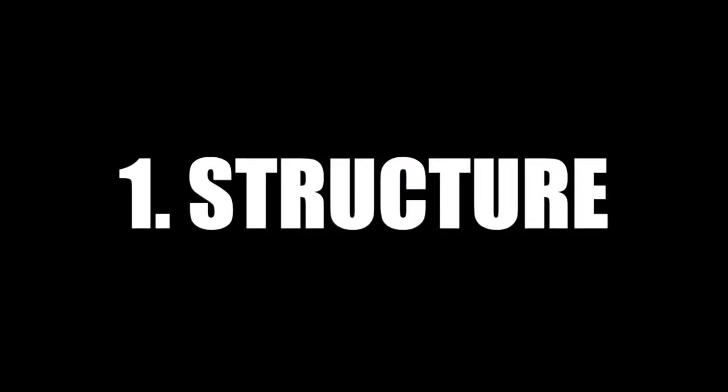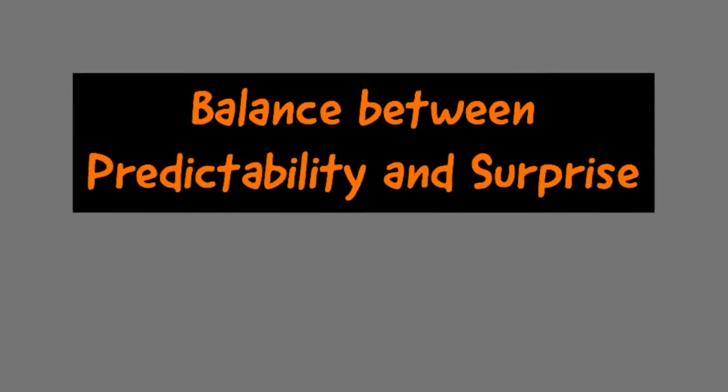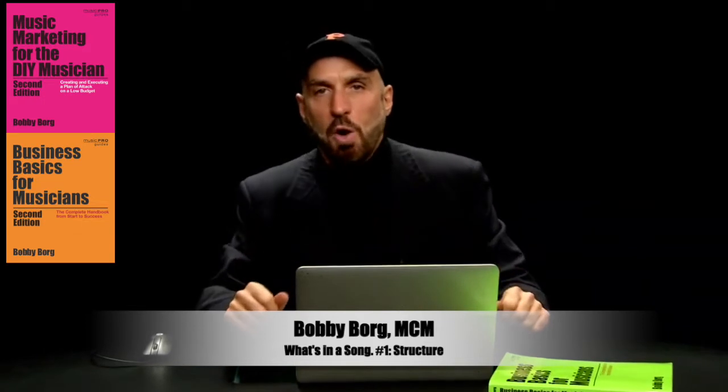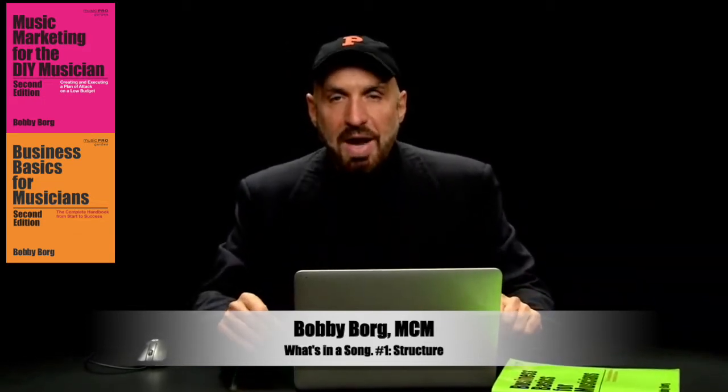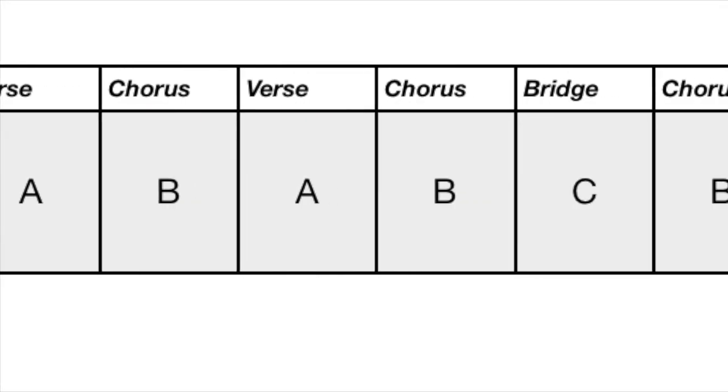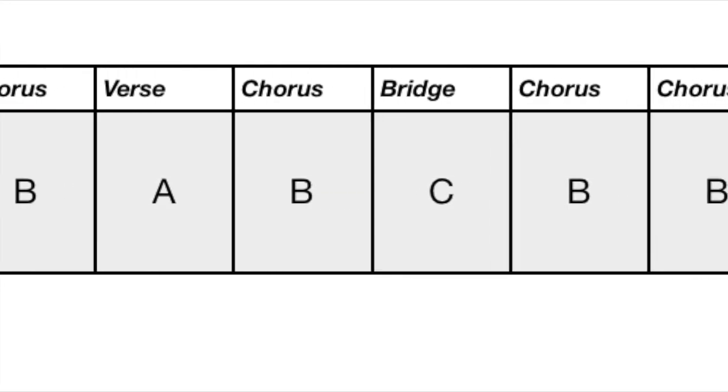Point number one: structure. Ralph Murphy pretty much sums up that the structure of most hit songs has a balance between predictability and surprise. The song is predictable so that we can grasp it, but it also has an element of surprise so that we don't get bored. The form that fits this is verse, chorus, verse, chorus, bridge, chorus, chorus — A, B, A, B, C, B, B.